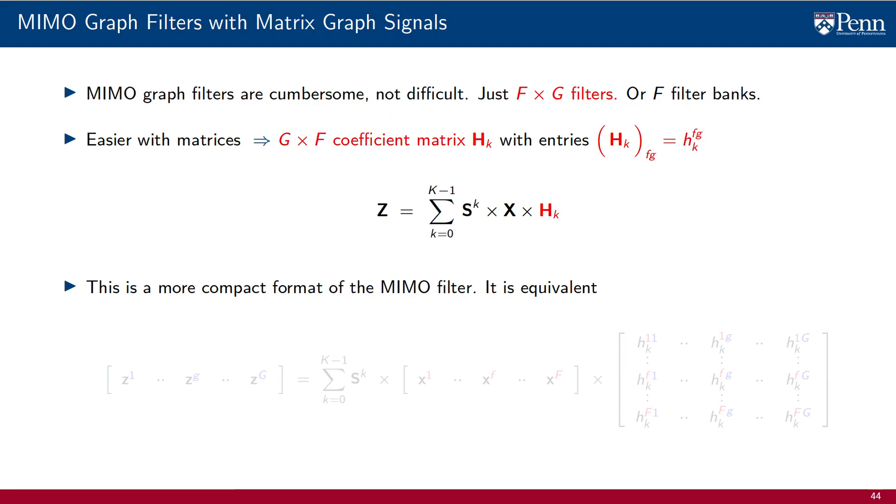This is a more compact notation for the MIMO filter, but it is equivalent. If you need help seeing that the definitions are indeed equivalent, just expand the matrices. When we do that, we see that the graph filter output ZG has the same expression we covered some seconds ago. This is just algebra.